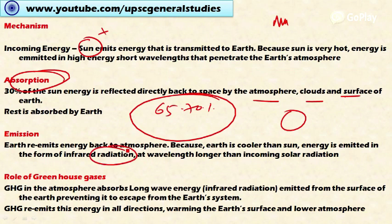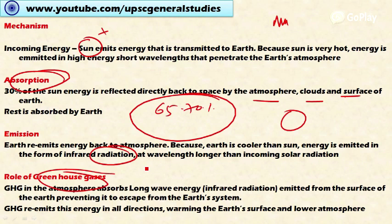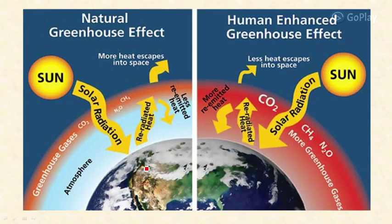This long-wavelength infrared radiation emitted by the Earth is absorbed by greenhouse gases. Some of it is reflected back to the atmosphere, and some is absorbed. The greenhouse gases then re-emit the absorbed energy, dispersing it throughout the atmosphere, keeping the Earth warmer and creating congenial conditions for the growth of living beings.